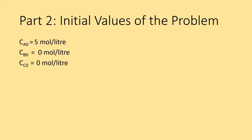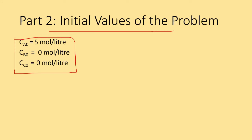Moving on to part 2, we obtain the initial values for the problem, which are clearly stated in the question. The initial concentrations are CA0 = 500, CB0 = 0, and CC0 = 0.